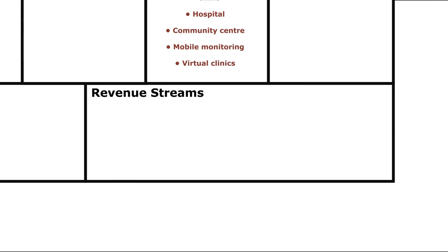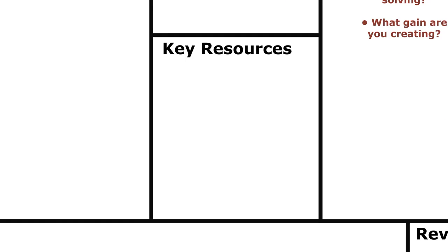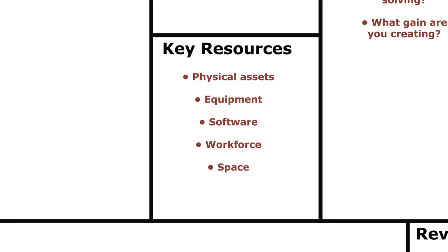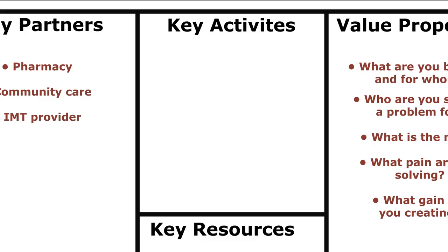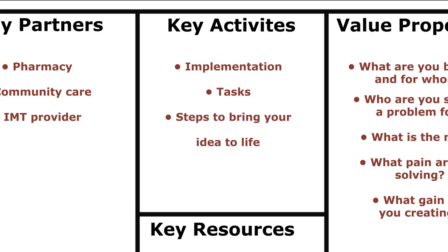Revenue streams in health and care provision refers to how your idea will be paid for and how it might save costs or add value to the care of service users. Key resources asks what you need to make the business model work — physical assets, equipment, software, workforce, or office space. You will also describe your key partners and suppliers: what you're acquiring from partners and what activities they will perform — for example, pharmacy, community care, or a software manager. Key activities are the important things you need to perform to achieve success — your implementation, the tasks and steps that bring your idea to life.